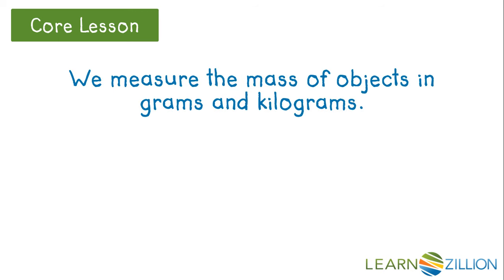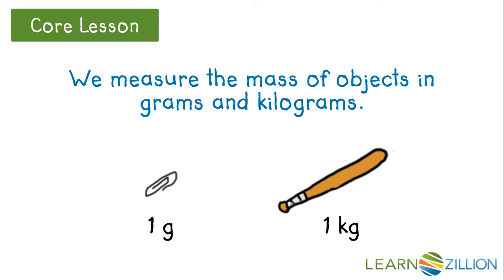We measure the mass of objects in grams and kilograms. To help us understand these different measurements, we use benchmark weights that give us a better idea of different masses and what they feel like. A paper clip has a mass of about one gram. A baseball bat has a mass of about one kilogram. The prefix kilo means one thousand, so a baseball bat has the same mass as about a thousand paper clips.